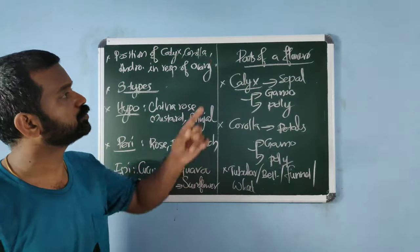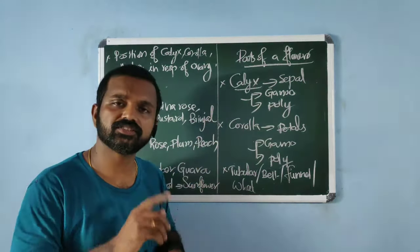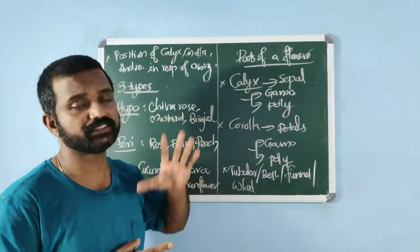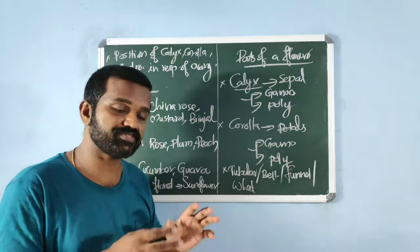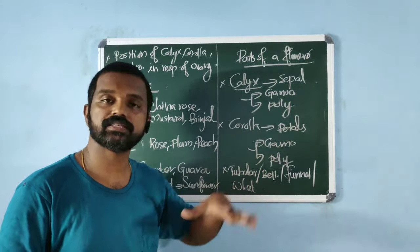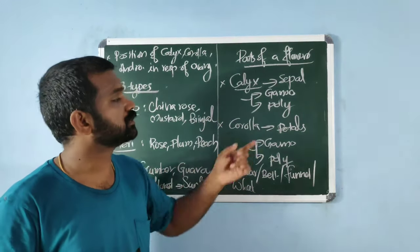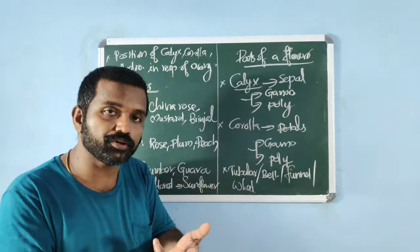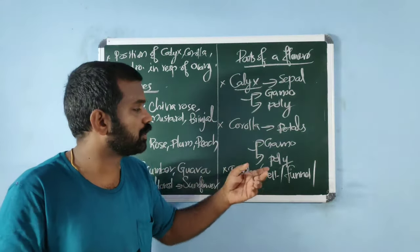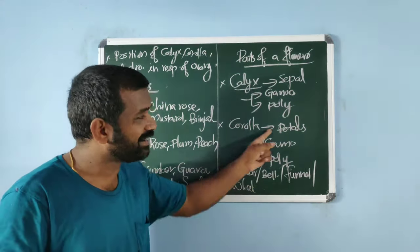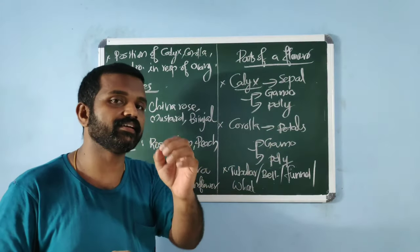Parts of a flower: the outer whorl is calyx, which consists of sepals. If sepals are fused it is gamosepalous; if free from each other it is polysepalous. Corolla is the brightly colored part consisting of petals. If petals are fused it is gamopetalous; if petals are free from each other it is polypetalous. The color and shape of corolla vary greatly — shapes include tubular, bell-shaped, funnel-shaped, or wheel-shaped.